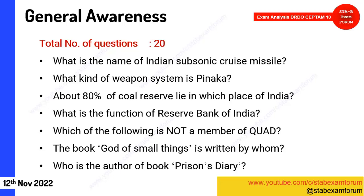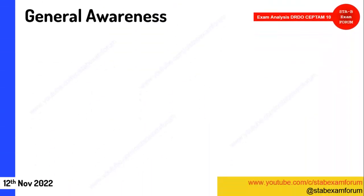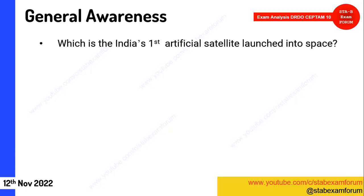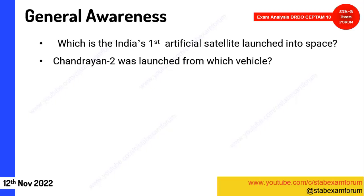What is India's first satellite? It is Aryabhata. Chandrayaan-2 was launched from which vehicle? It is GSLV Mark III — that was the correct answer.